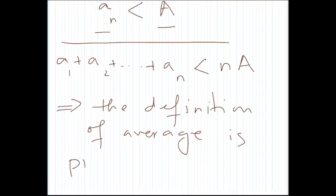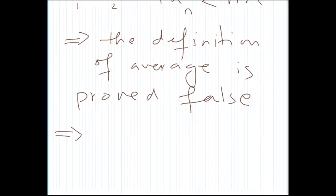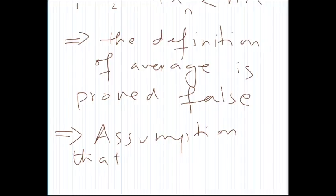is proved false. So definition of average is something universal. So something universal has been, which is known to be universally true, has been proved to be universally false. Therefore, our assumption—assumption that all ai's less than A